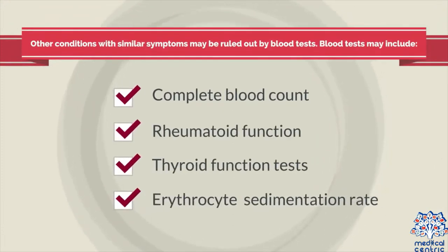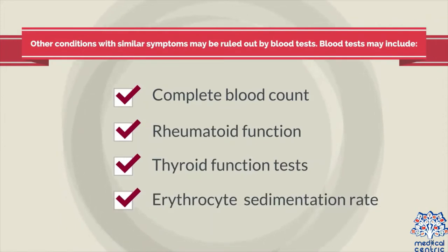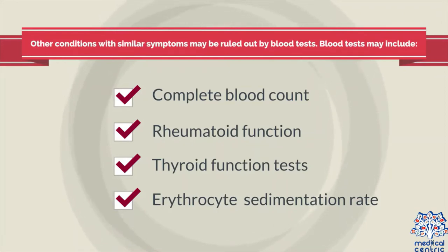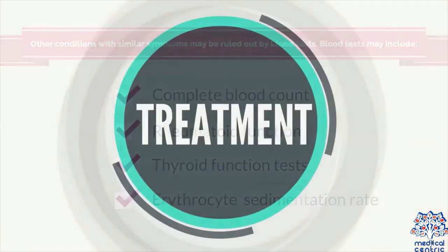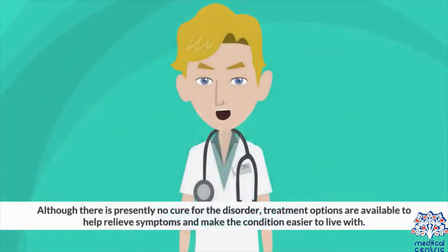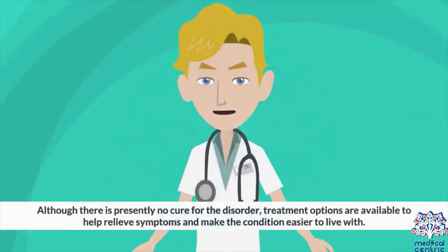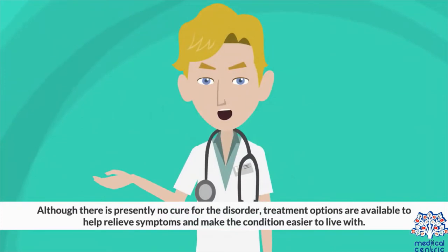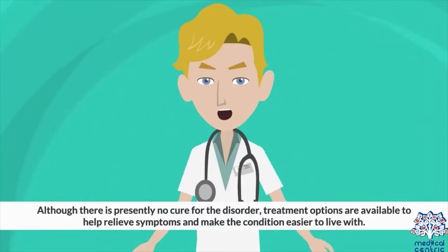There is no single test that can fully diagnose fibromyalgia. A diagnosis can be made if a person has experienced widespread pain for three months or longer with no identifiable underlying condition. Other conditions with similar symptoms may be ruled out by blood tests including complete blood count, rheumatoid function, thyroid function tests, and erythrocyte sedimentation rate. Although there is no cure, treatment options are available to help relieve symptoms.